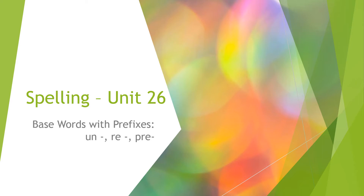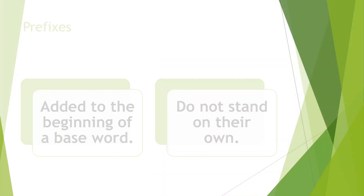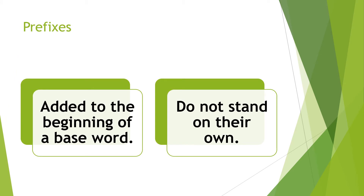Hello, fourth grade. This is Spelling Unit 26, for the week of March 30th. This week we're looking at base words with prefixes un, re, and pre. A little quick review — remember with prefixes, prefixes are added to the beginning of a base word, and they are word pieces, but they're not really words that stand on their own.